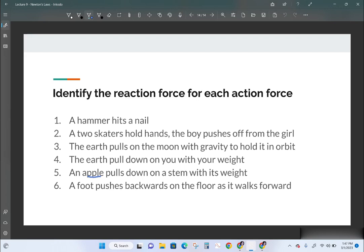Now listen to this. An apple pulls on a stem with its weight. The stem pulls back on the apple. I didn't say the earth pulls on the apple with its weight. I said the apple pulls on the stem. So I've changed my two objects. And then a foot pushes backwards on the floor as it walks forward. So when I'm walking, I push on the floor like this and the floor pushes me equal and opposite. The reason why the earth doesn't move backwards is because it's so big. And mass and acceleration are inversely proportional for the same force. So the earth is huge, so it doesn't move backward. I don't push with enough force to overcome its inertia.